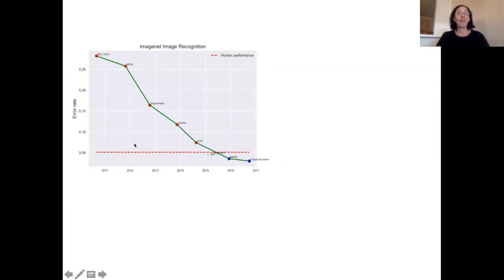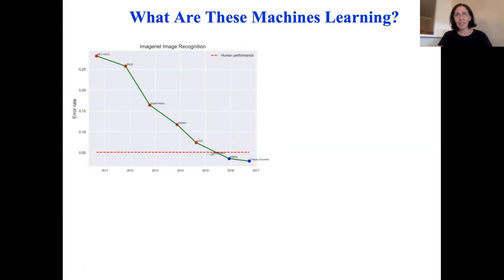This red line is human level on this task. But the question is, what is it exactly that these machines are learning? We've seen this kind of improvement in vision, language, robotics, speech recognition, all over the place. But it's hard to understand exactly what these machines are actually learning.